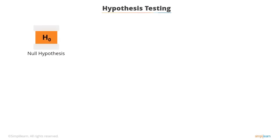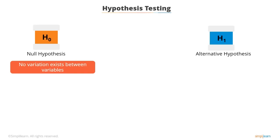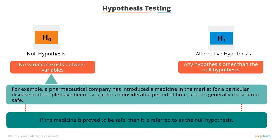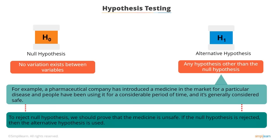The null hypothesis attempts to show that no variation exists between variables, while the alternative hypothesis is any hypothesis other than the null. For example, say a pharmaceutical company has introduced a medicine in the market for a particular disease, and people have been using it for a considerable period of time and it's generally considered safe. If the medicine is proved to be safe, it is referred to as the null hypothesis. To reject the null hypothesis, we must prove the medicine is unsafe. If the null hypothesis is rejected, then the alternative hypothesis is used.